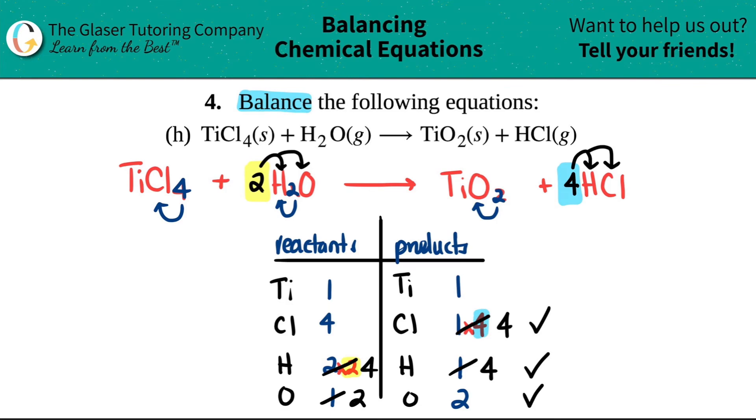And then for the Titanium, that was always balanced. So this is the answer. So you will have one TiCl4 plus two H2Os. And when you have those, they will yield one TiO2 and then four HCls. And that's it, guys.